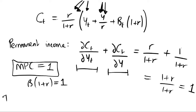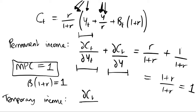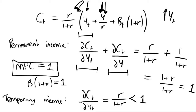Now let's look at a temporary income shock, which is much simpler. Since yt is our temporary income term, the derivative of ct with respect to yt is simply r over 1+r. Clearly r/(1+r) is less than 1, since the denominator exceeds the numerator. So if income increases only in the current period, we save some of that increase for future periods — this is consumption smoothing. We prefer to spread consumption over time due to our convex utility function.